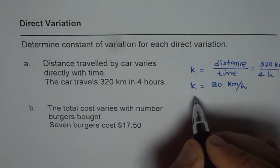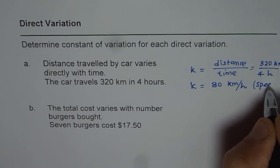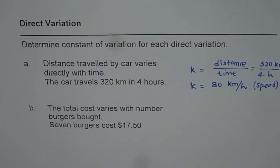So, that really represents speed of the car. So, in this case, the constant represents speed of the car in km per hour.